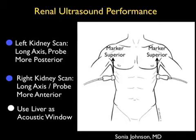For the left side, we want to put the patient in the right lateral decubitus position with the left side up, so we can come in from that posterior position and image the kidney. On the right side, we can come in from a more anterior approach using the liver as our acoustic window, but it's also a good idea to put the patient in the left lateral decubitus position with the right side up to get good views of the kidney.